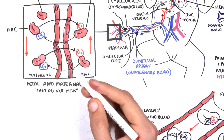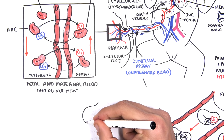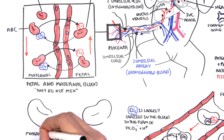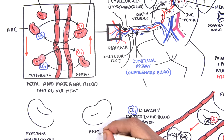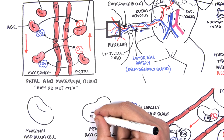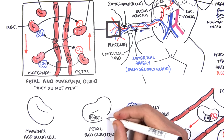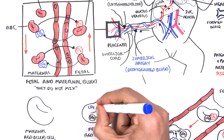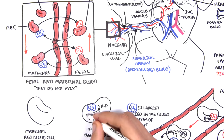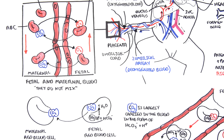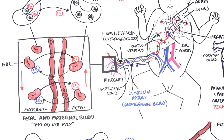In the placenta, the fetal circulation again meets the maternal circulation. The maternal and fetal red blood cells meet, and the bicarbonate ions react with hydrogen to form carbon dioxide and water. Once this reaction takes place, carbon dioxide diffuses into the maternal circulation. In the placenta, the fetal red blood cell then receives oxygen again, and the whole process continues.